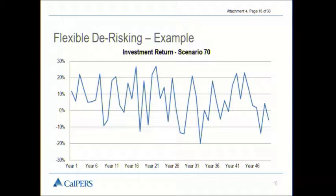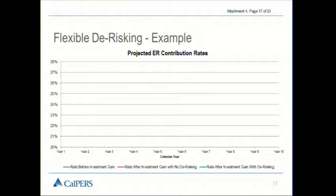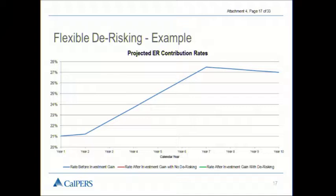In the third year, we actually get slightly above 20%. That's when the first de-risking event will occur. So the example we've got here — this is the projected employer contribution rate just prior to that first good investment year. This is what we would have been showing in the employer's valuation report, although it does have the change in the normal cost due to more PEPPER members coming on, which we wouldn't actually be showing in the valuation report. But this is the type of information the employer would have available prior to that first de-risking event.